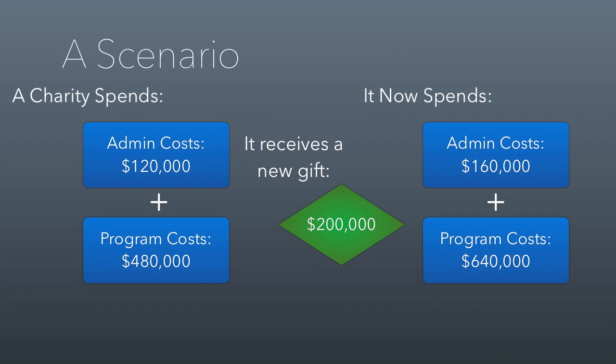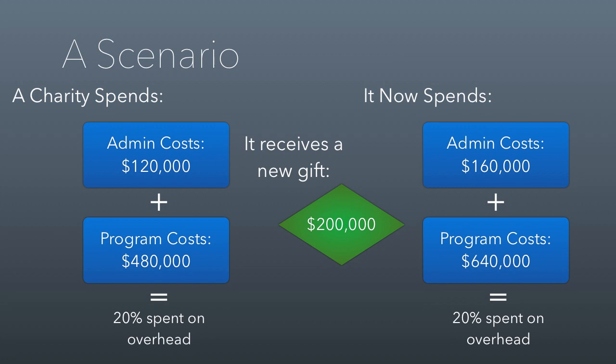In the latter case, their program ratio is about 80%, meaning 20% is spent on overhead and 80% is spent on programs, which is a pretty good program ratio if you're going to be evaluating non-profits that way. But you'll notice this is the exact same program ratio that they had before they got the money.